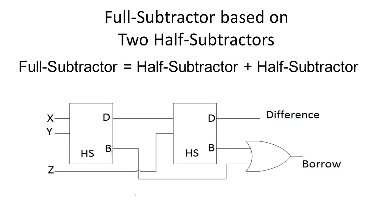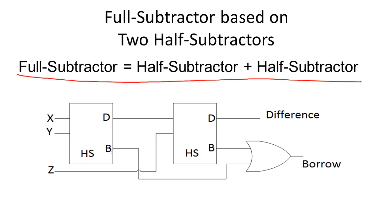Now let's look at full subtractor — its function table, expression, and logic circuit. Before that, let's understand how to implement the truth table of a full subtractor. A full subtractor can be implemented by combining two half subtractors. We have three inputs: X and Y are our data or bit inputs, and Z is a borrow input. For the first half subtractor, we compute X minus Y.